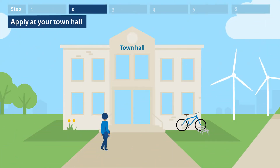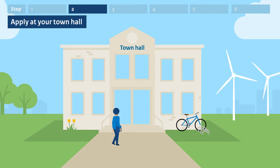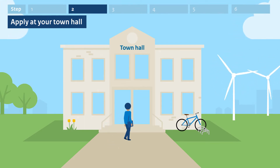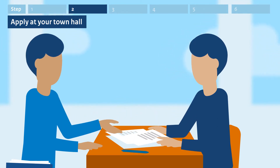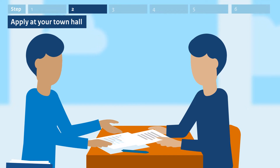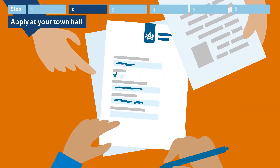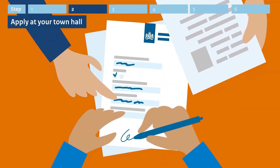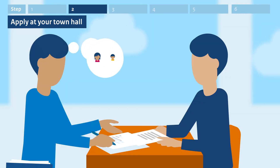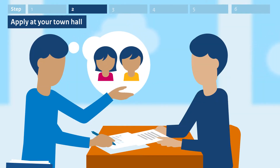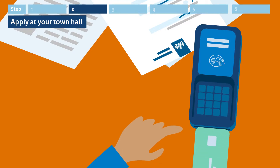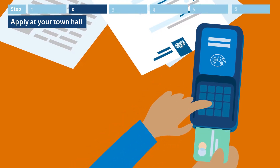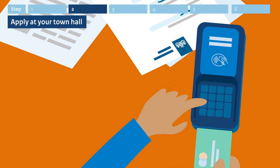Step 2. Apply at your town hall. Make an appointment at the town hall in the municipality where you live. During the appointment, a member of staff from the town hall will discuss the conditions with you and check if you have all the documents. Then the member of staff will complete the application with you. Do you have children under 18 and would you also like to apply for naturalization for them? You can do this at the same time as your application. You must pay for your application straight away. Find out how much it will cost on our website.